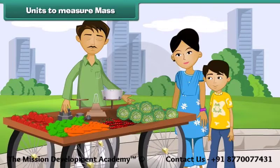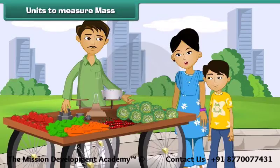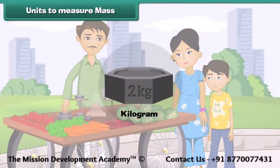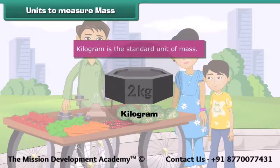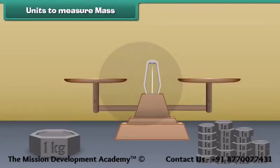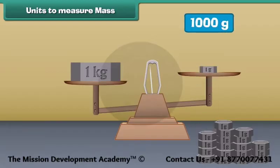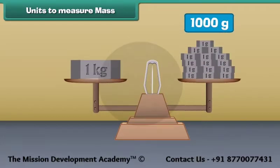You might have gone with your mother to buy vegetables. You must have heard your mother asking for 1 kilogram cabbage, 5 kilogram potatoes, 100 grams green chili, etc. Kilograms and grams are the two units used for measuring mass of substances, among which kilogram is the standard unit of mass. If 1 kilogram is divided into 1000 parts, then one part is called a gram. This means 1 kilogram is equal to 1000 grams.